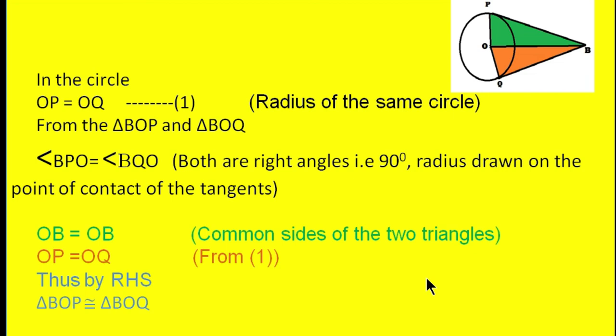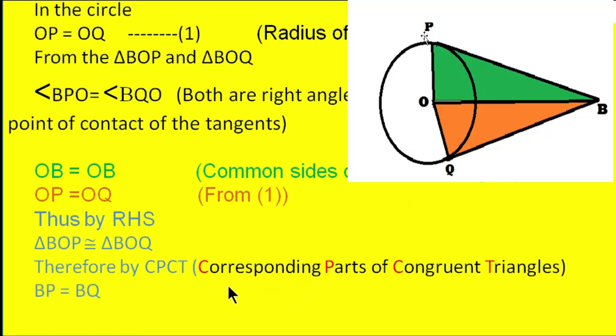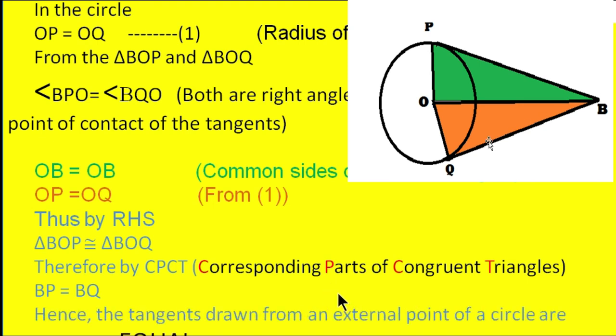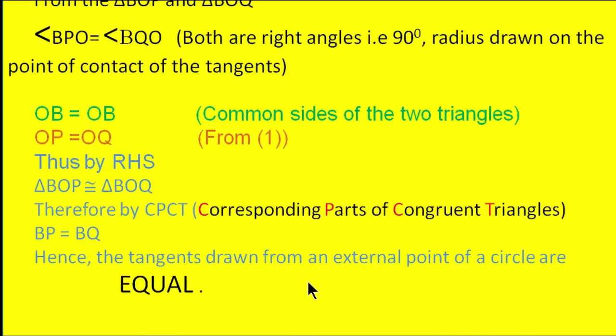And as they are congruent, therefore by CPCT—that means corresponding parts of congruent triangles—the two sides BP and BQ are equal. Hence we can say the tangents drawn from an external point of a circle are equal. Proved.